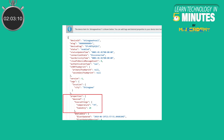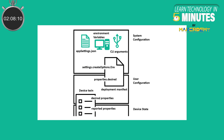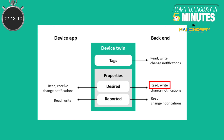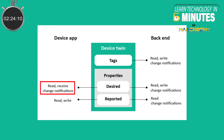Desired properties are used to send state information to the device. Desired properties in device twin documents are used for synchronization and configuration purposes. The back-end is authorized to set the desired properties and can also read them, whereas the device app can only read them. The back-end can send notifications and the device app can receive notification of changes in desired properties of the device twin.